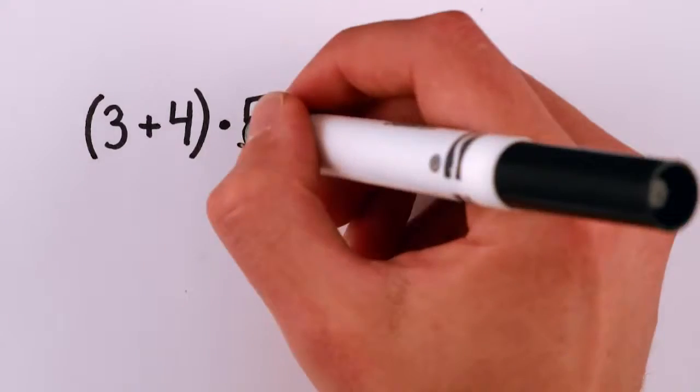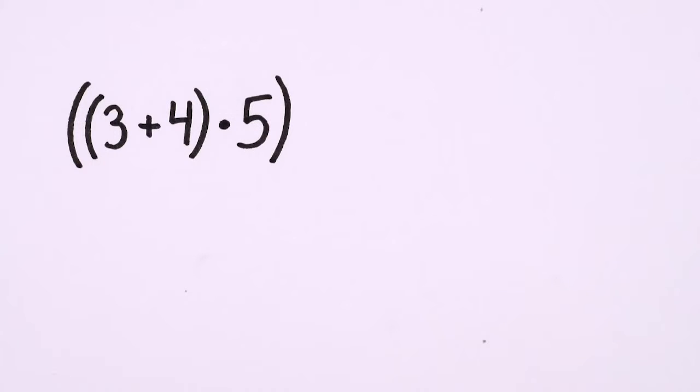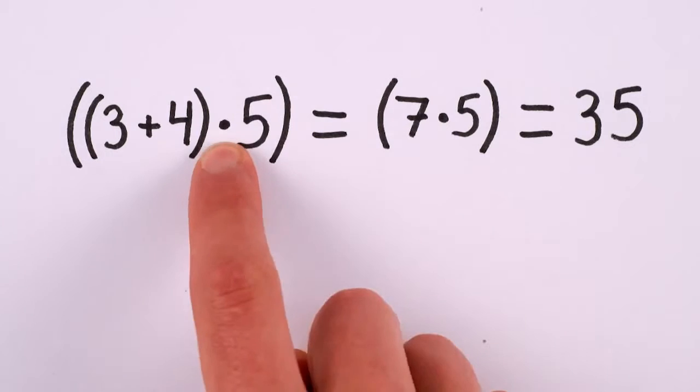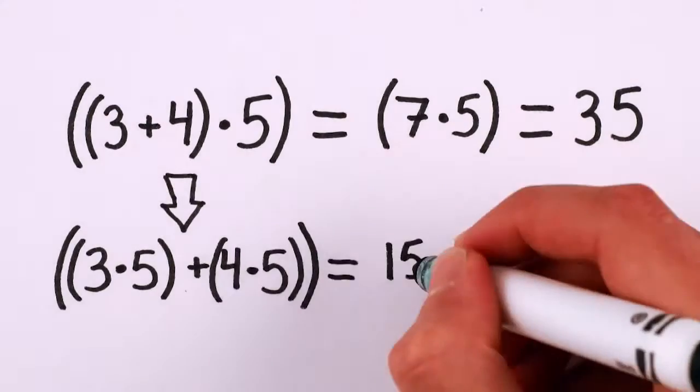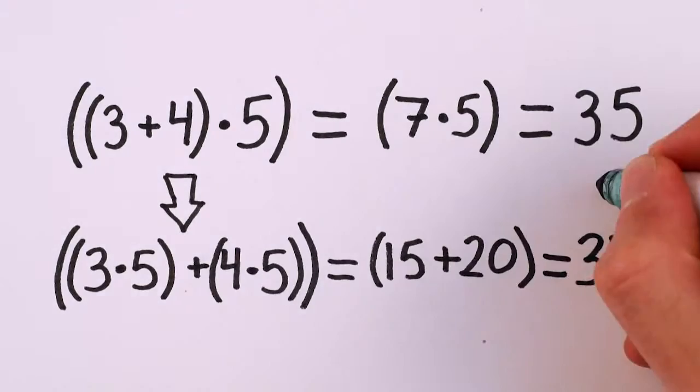For example, if you want to add 3 plus 4 and then multiply the result by 5, you can either do the addition first and get 7 times 5 equals 35, or you can do the multiplication first, as long as you know that multiplication distributes across all the terms in the parentheses. That is, 5 times 3 plus 5 times 4 equals 15 plus 20 equals 35. The same answer.